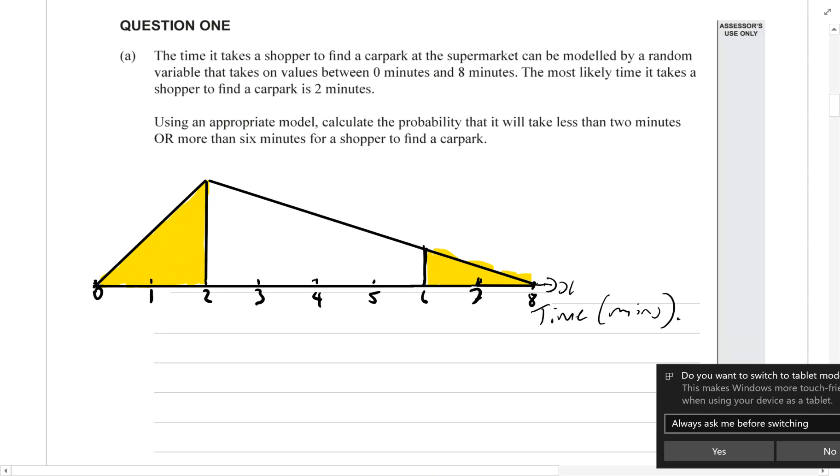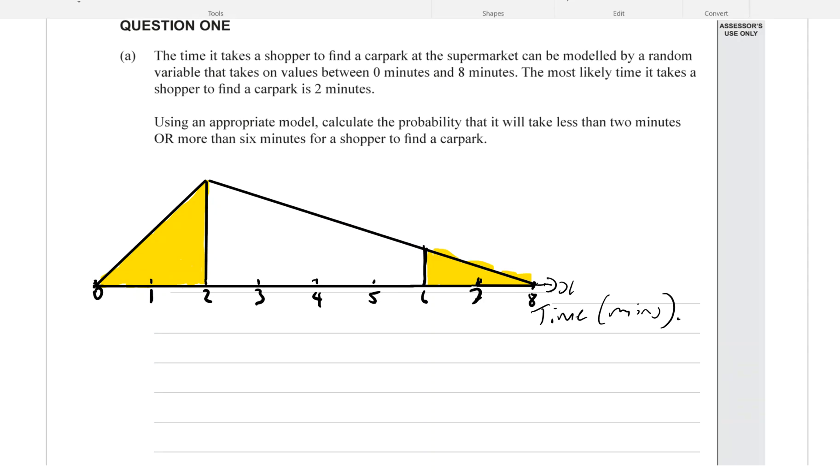Now, the first thing that we always need to do when calculating probabilities using a triangular distribution model is define the height at the mode, the peak. So how do we do that? See if you can remember. Why don't you pause the video and see if you can work out the height at the mode.